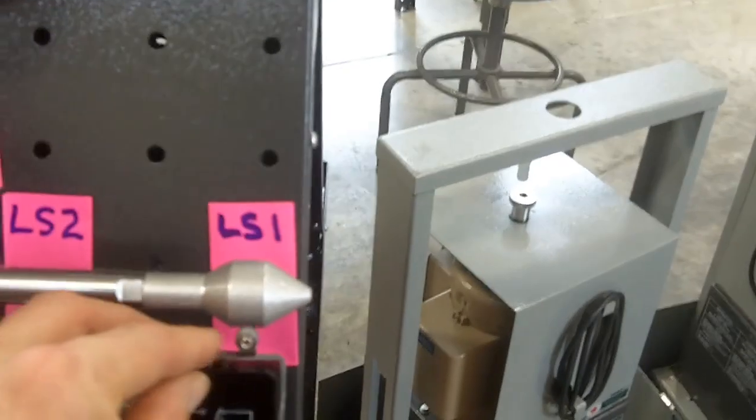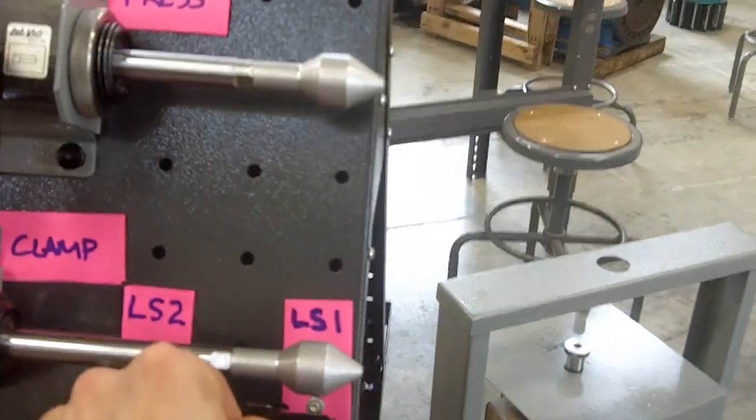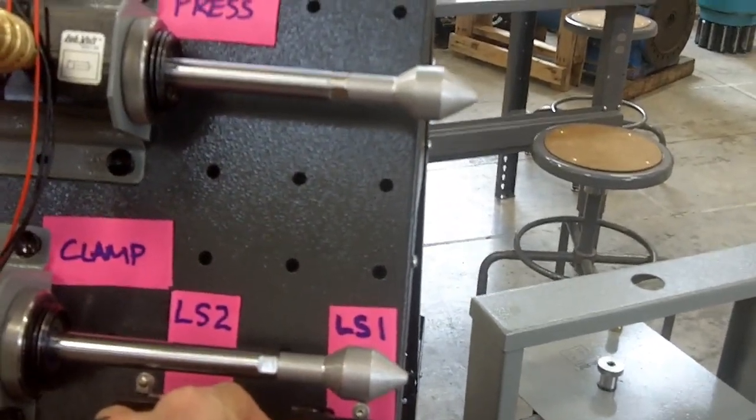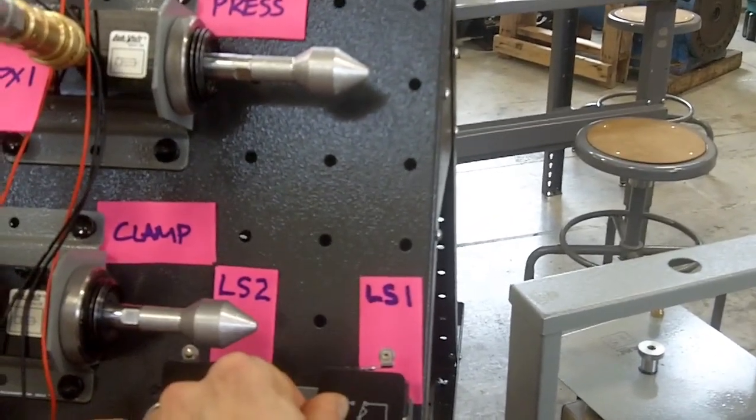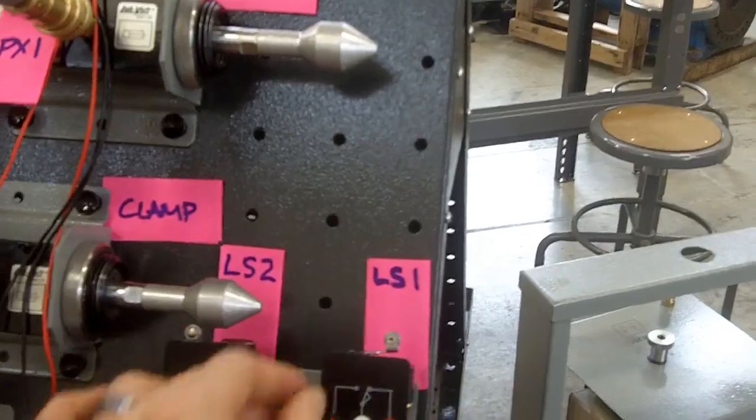So how can we fix this problem? Have it hit limit switch one. Now our presser extends, it retracts, and then our clamp retracts.